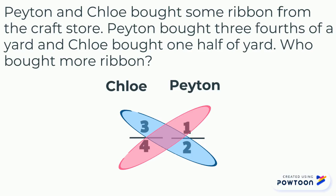So, four times one equals four, and I am going to write the product four up here. And three times two equals six, so I will write a six up here.